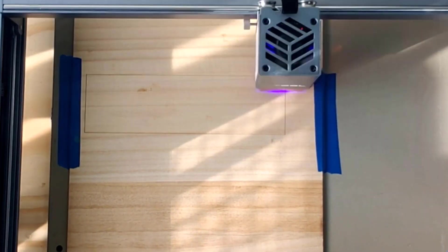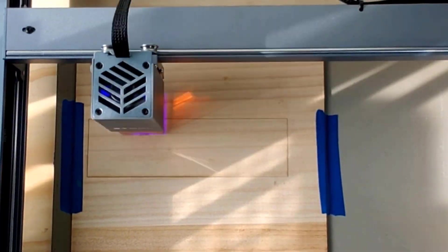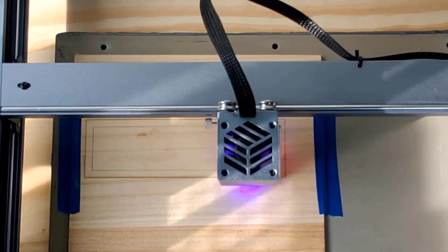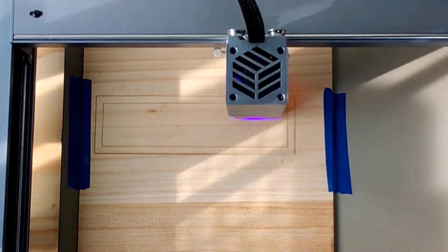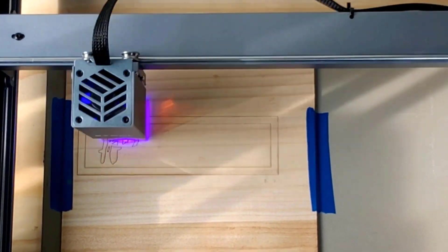I made this adorable farmhouse tier tray sign using the X-Tool D1 laser engraver. I purchased this laser engraver from Amazon and I have to say it is amazing. I've been playing around with it for a couple of weeks now and have finally figured enough out to show y'all what it can do.